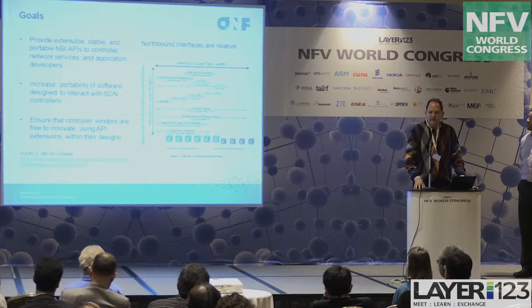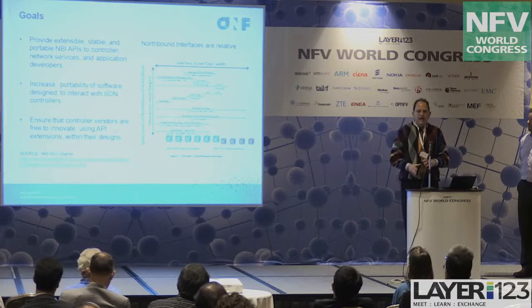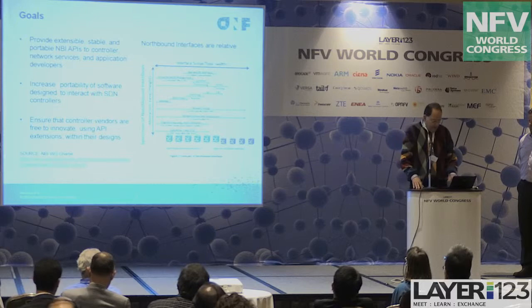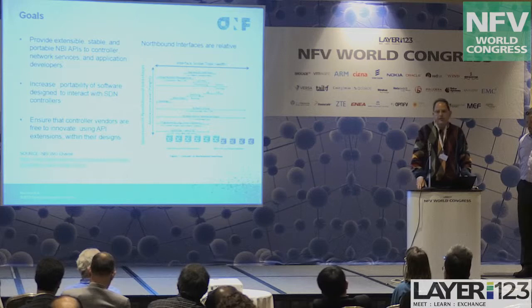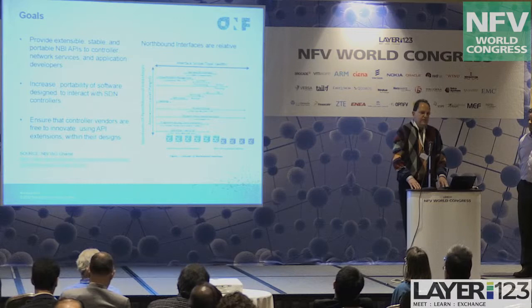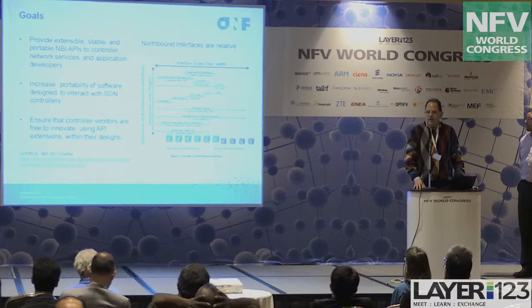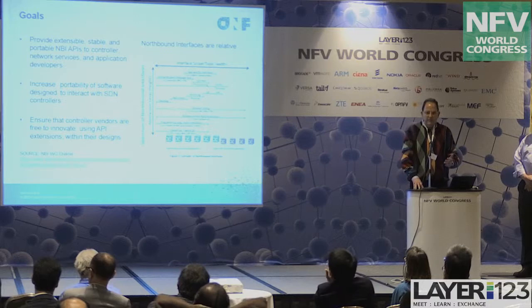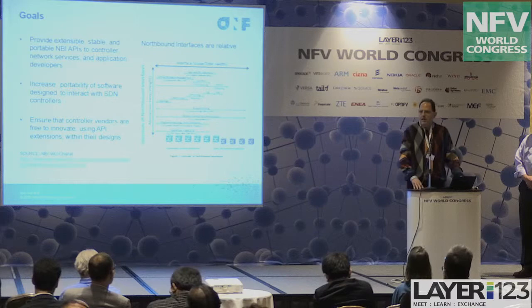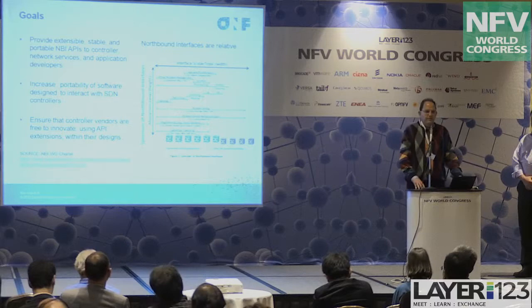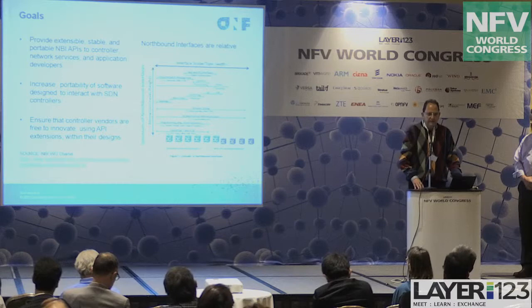The first goal is to provide a portable NBI — northbound interface — API framework that allows flexibility to reside at different layers within this model. Portability means we're able to pick up applications and move them to different controllers without having to materially change the applications. We also want to ensure that different controller vendors are free to innovate. The goals are specified in the charter for the northbound interface working group, available on the ONF public website at the URL shown.